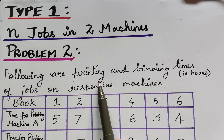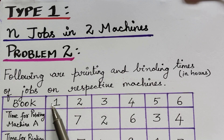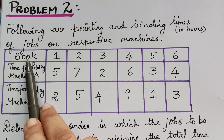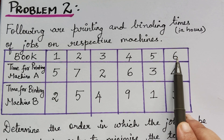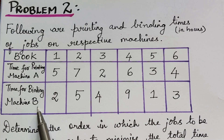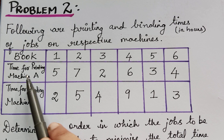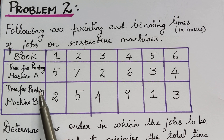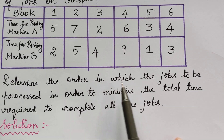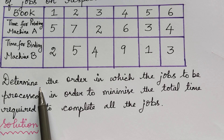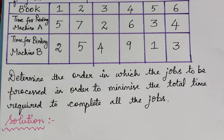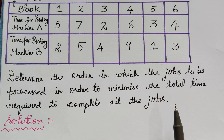Following are printing and binding times in hours of jobs on respective machines. The jobs given are books — we have to produce books 1 to 6. The first machine does the job of printing and the second machine does the job of binding, that is machine A and machine B, with their processing times given. We have to determine the order in which the jobs are to be processed, find the job sequence, and also minimize the total elapsed time — the total time required to complete all the jobs. We also have to find the idle time.